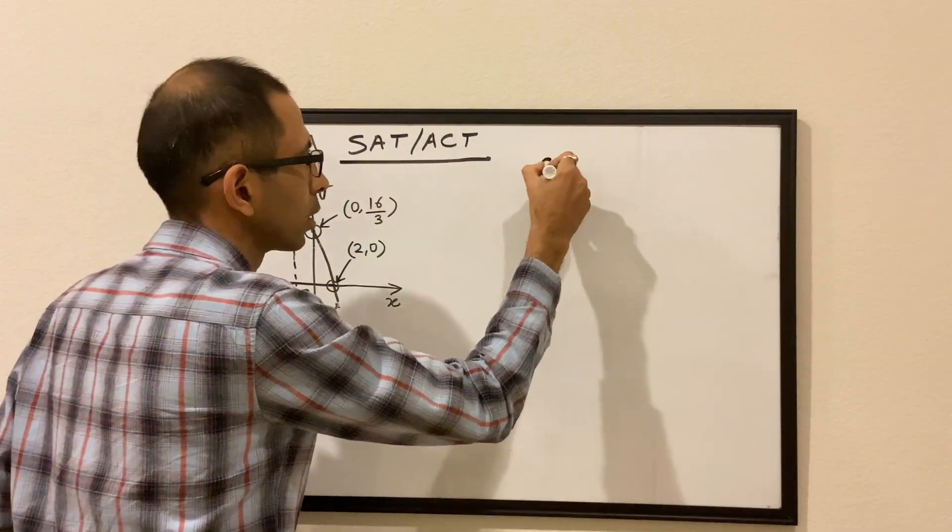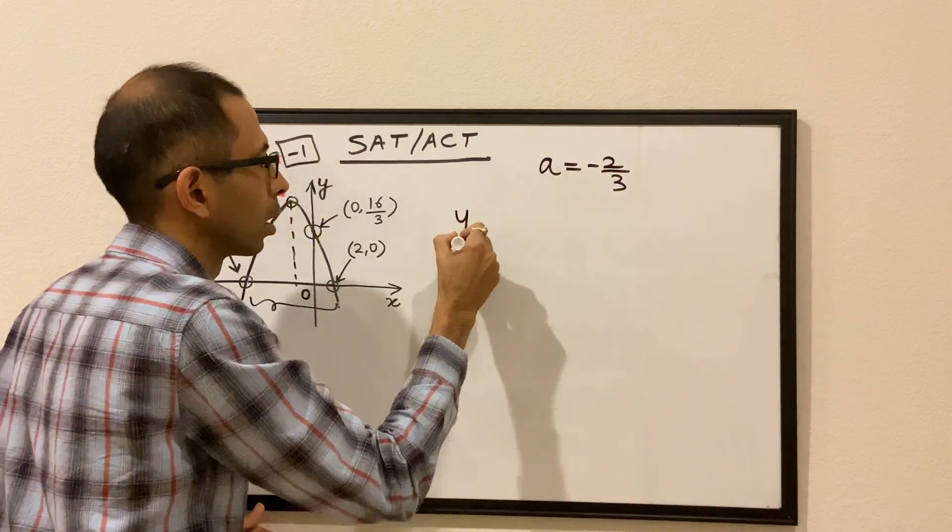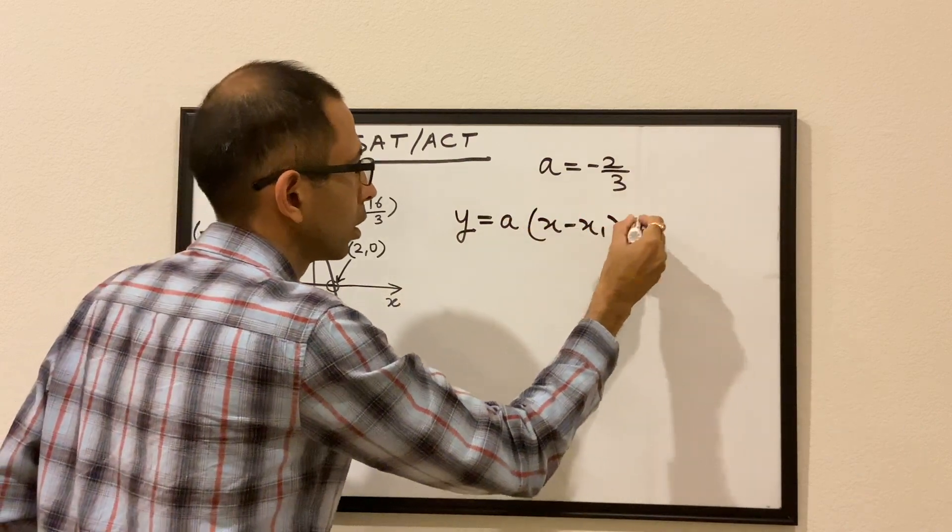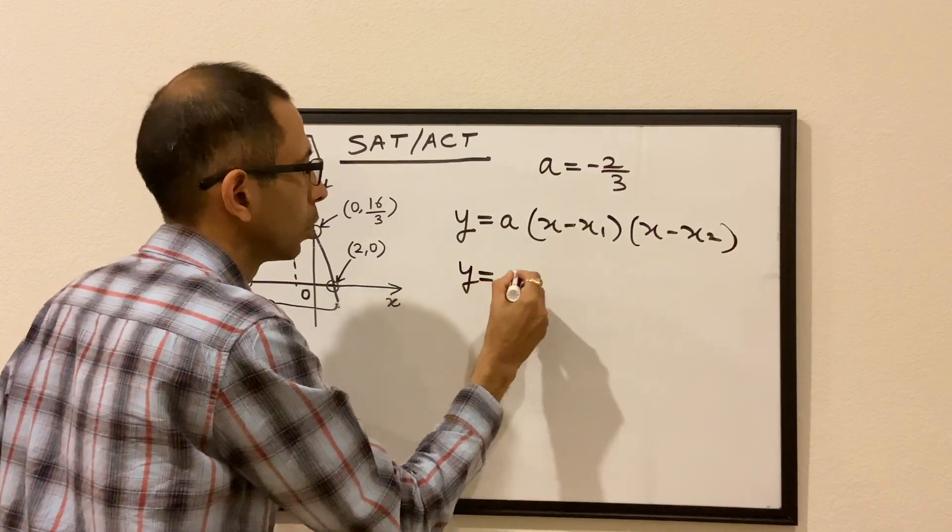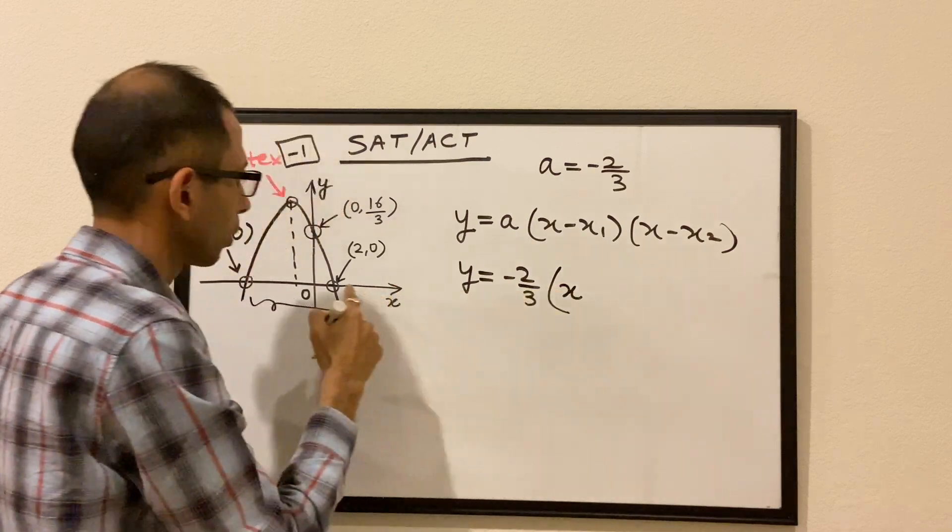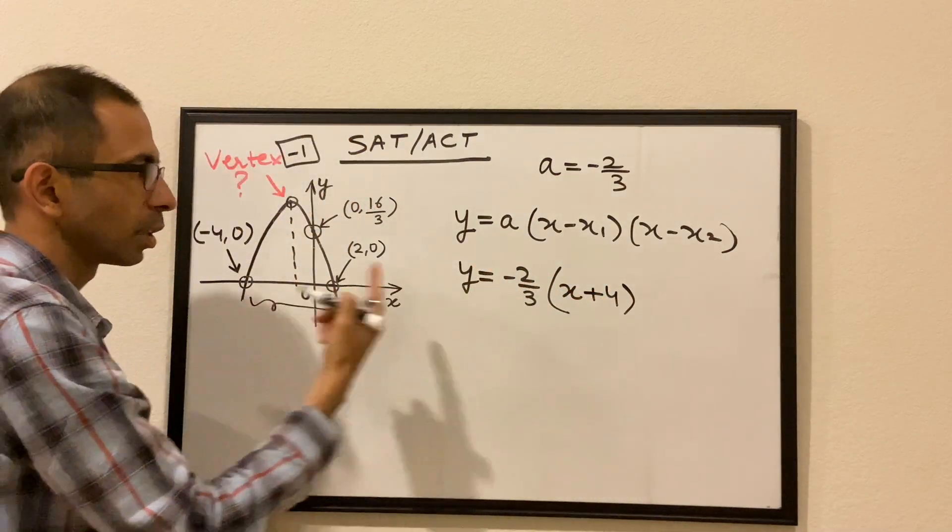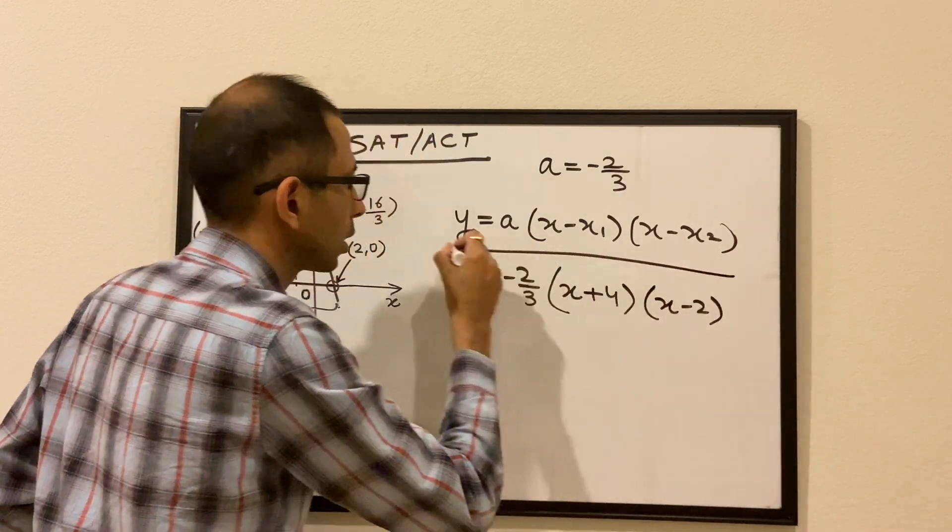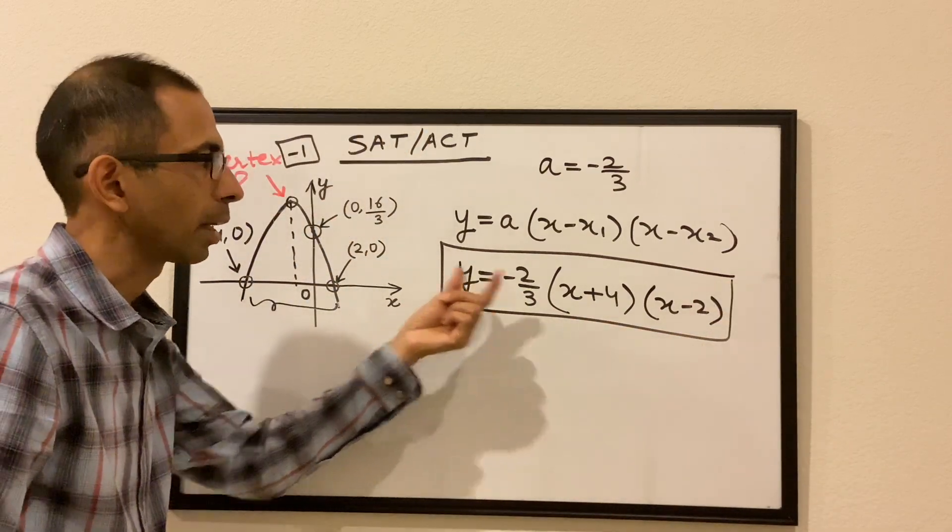The value of a we found was -2/3. Our parabola looks like this, a(x-x₁)(x-x₂). So y equals -2/3, x minus x₁, x minus -4 is x plus 4, and then x minus 2. So this is the equation of our parabola.